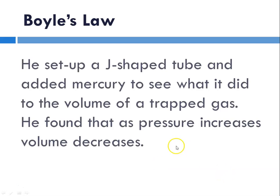He set up something called a J-tube and added mercury to it, and he looked at what happened when you changed the volume of the trapped gas. He looked at the relationship between the pressure and the volume of a trapped gas and he found that as the pressure on a gas increases, its volume decreases.